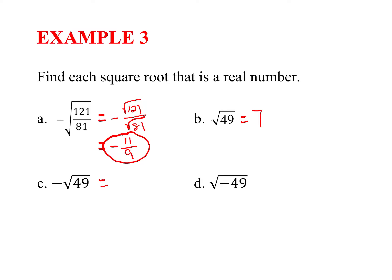When the negative is on the inside of the square root, we can't do it — that would give us an imaginary number. If you plug it in your calculator, you're going to get an error message. In this case, you can write 'not possible,' 'does not exist,' or 'not a real number' — lots of options if the negative is on the inside.